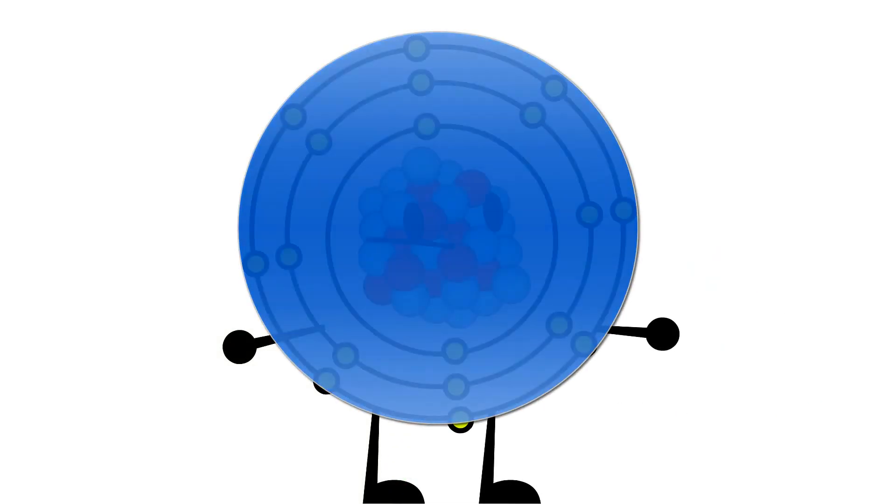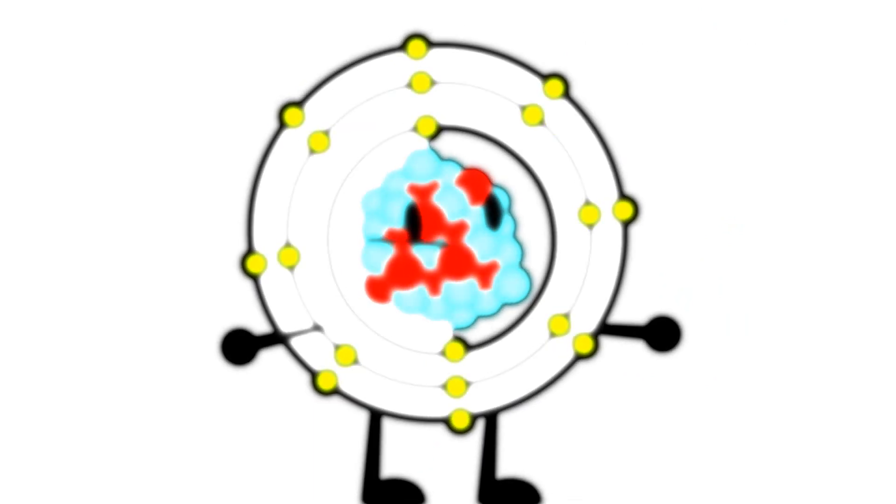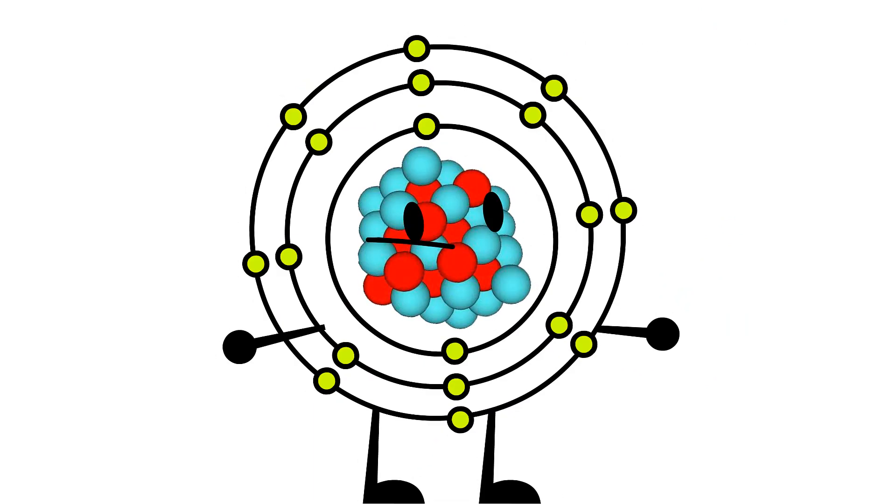Electrons are located in the outer part of me, in my electron cloud. My electrons are placed in a certain way. You see, there's a rule to follow. The first ring, or energy level, can hold 2 electrons. The rest of them can hold 8.